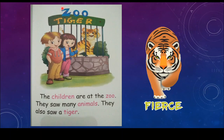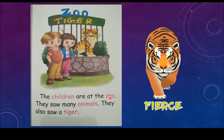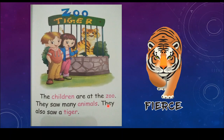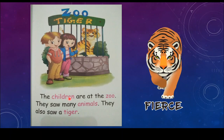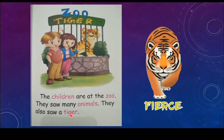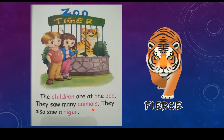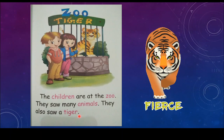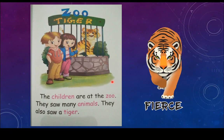First story will be about the zoo. Let's read together: 'The children are at the zoo. They saw many animals. They also saw a tiger.' The words in pink are the common nouns. Children, zoo, animals, and also tiger are common nouns in this story. Children means kanak-kanak, zoo ialah zoo, animals ialah haiwan, and tiger ialah harimau.